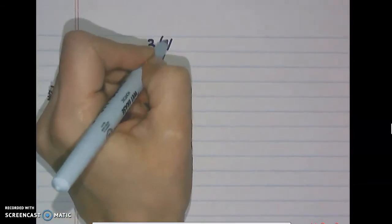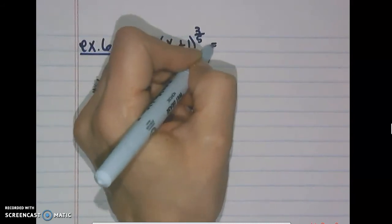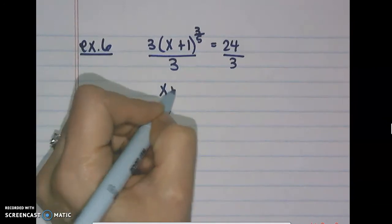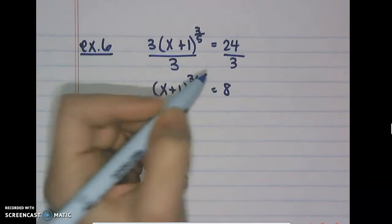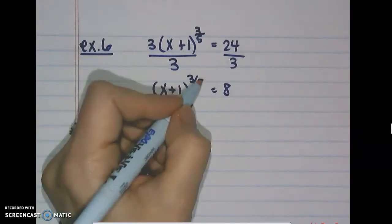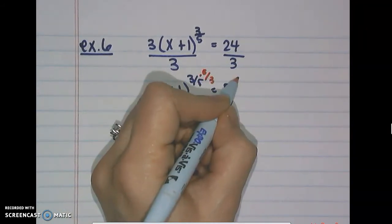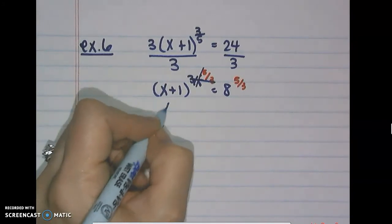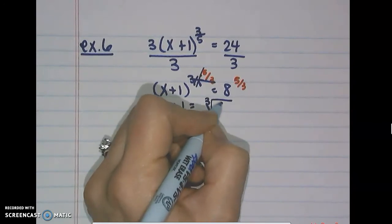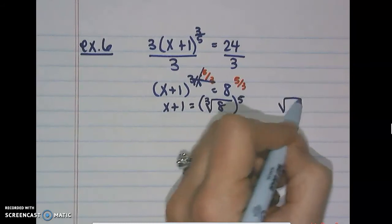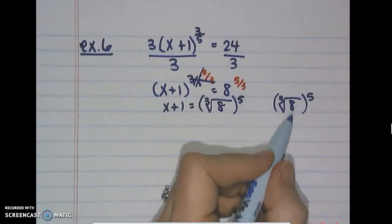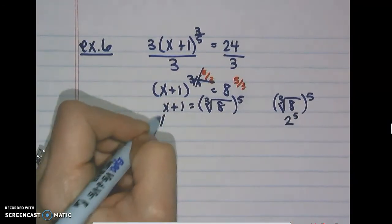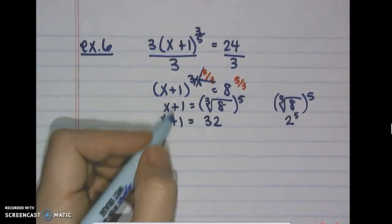Last example: 3 times the quantity (x plus 1) to the 3/5 power equals 24. Isolate the parenthesis by dividing by 3: (x plus 1) to the 3/5 power equals 8. To get rid of this, take both sides to the 5/3 power — the reciprocal — so those exponents cancel, leaving x plus 1 equals the cube root of 8 to the fifth power.